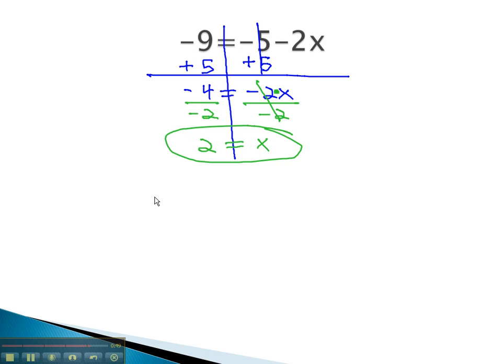At least we think we do, let's check it. Is negative 9 equal to negative 5 minus 2x, replacing the x with the 2? When we multiply first, is negative 9 equal to negative 5 minus 2 times 2 is 4? Well adding the opposite tells us that negative 9 equals negative 9.